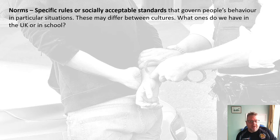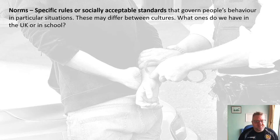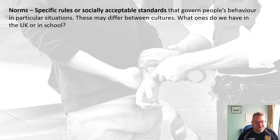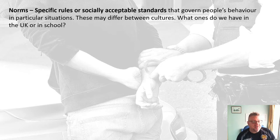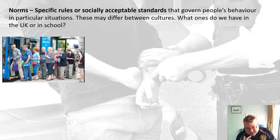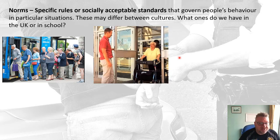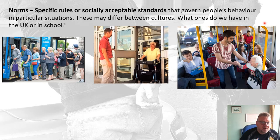When we come to the idea of a norm — just think of the word 'normal' — a norm is a specific rule or socially accepted standard. It's basically what is the normal thing to do within society, the normal way to behave. Norms govern our behaviour in particular situations and differ from culture to culture. For instance, in Britain it is customary to queue — we're very good at queuing. Or opening a door for an old person or someone who is disabled, or giving up your seat on a bus.